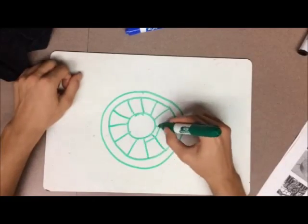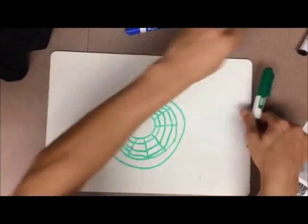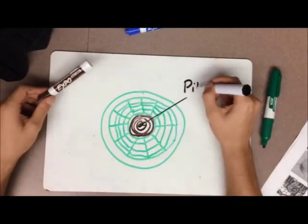Pith is a tissue in the stems of vascular plants. It is composed of soft, spongy cells which store and transport nutrients.